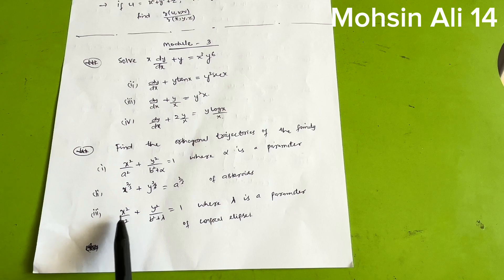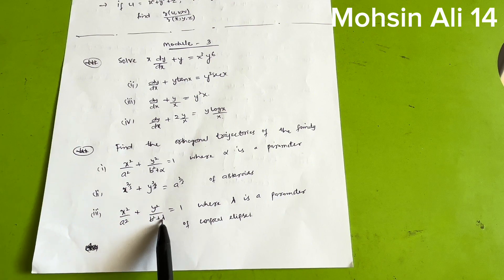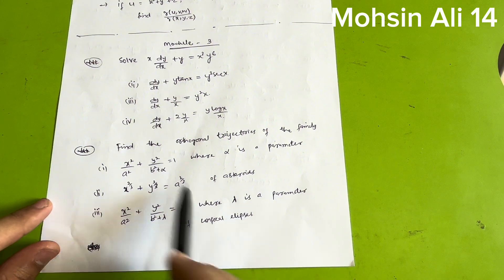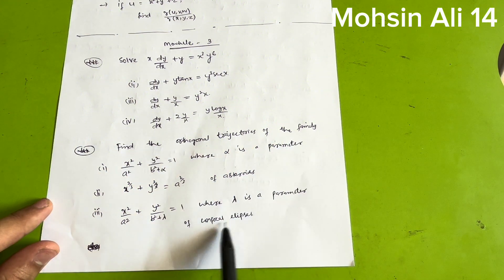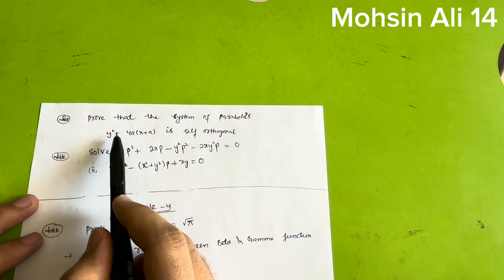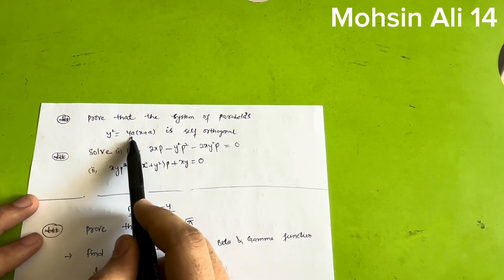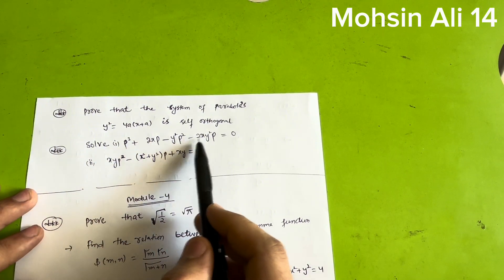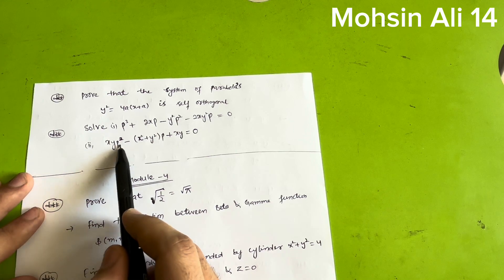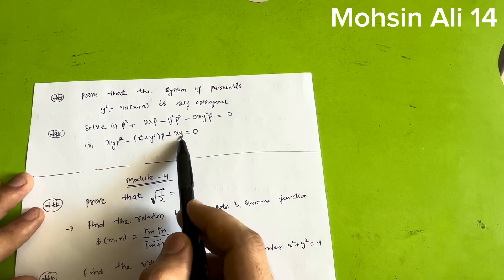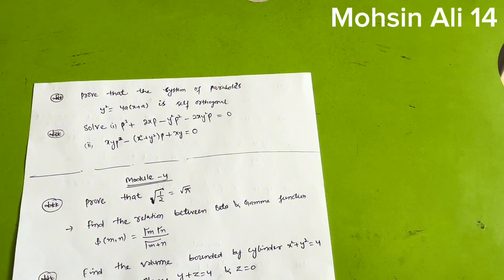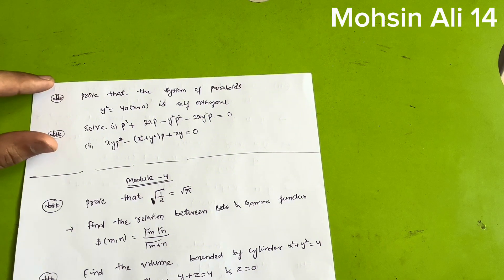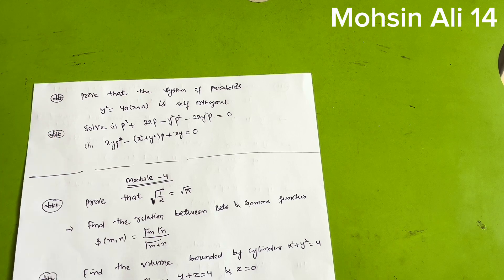Also find the orthogonal trajectories of x²/a² + y²/b² + λ = 1 (confocal ellipses, parameter λ). Two more important questions: prove that the system of parabolas y² = 4a(x + a) is self-orthogonal; and solve p³ + 2xp − y = 0, p² − 2xyp + (x² + y²)p − xy = 0. This is all for Module three — focus only on the first chapter.